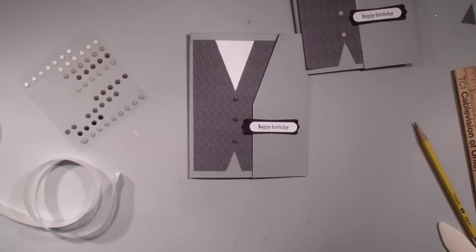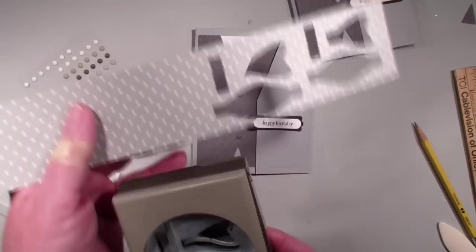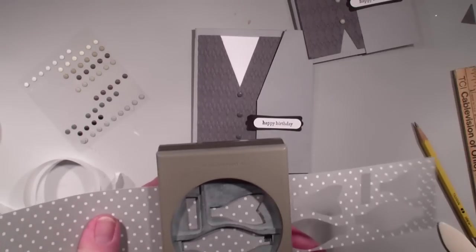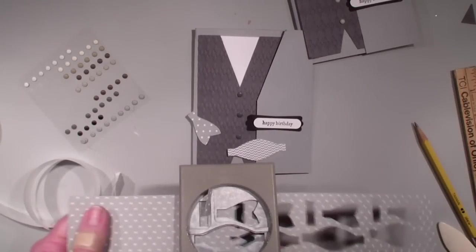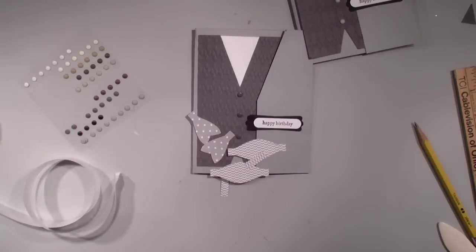Next I need to do my bow tie. I am using the naturals designer series paper stack and so I need to punch two of them like so.